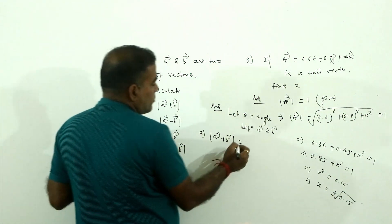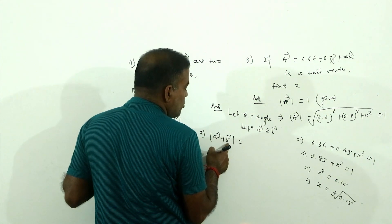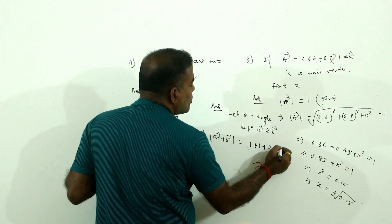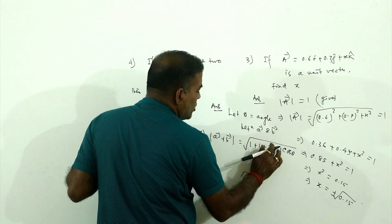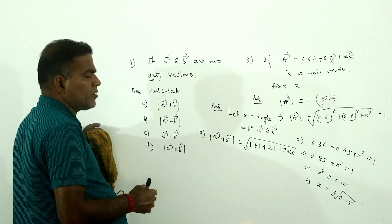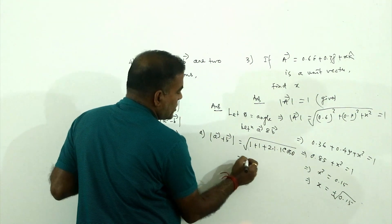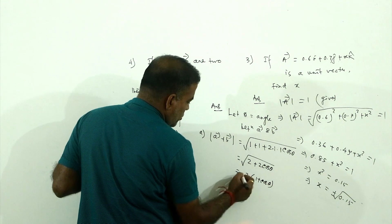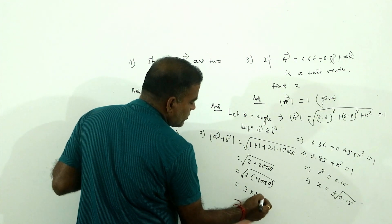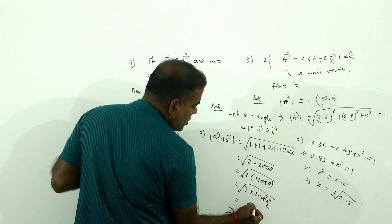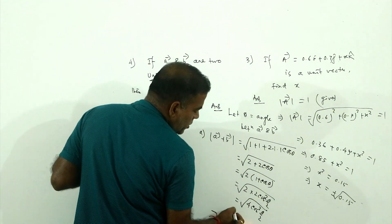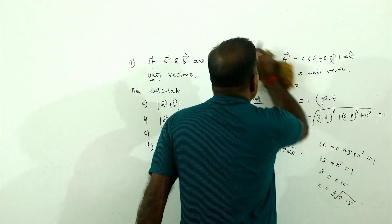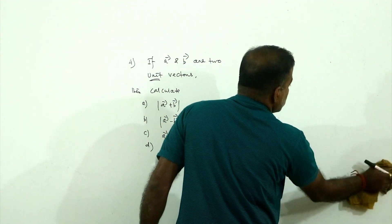Since both are unit vectors, their magnitudes are 1. Using the formula, |A plus B|² equals 1 plus 1 plus 2×1×1×cos θ. That simplifies to 4 cos² (θ/2), so |A plus B| equals 2 cos(θ/2).